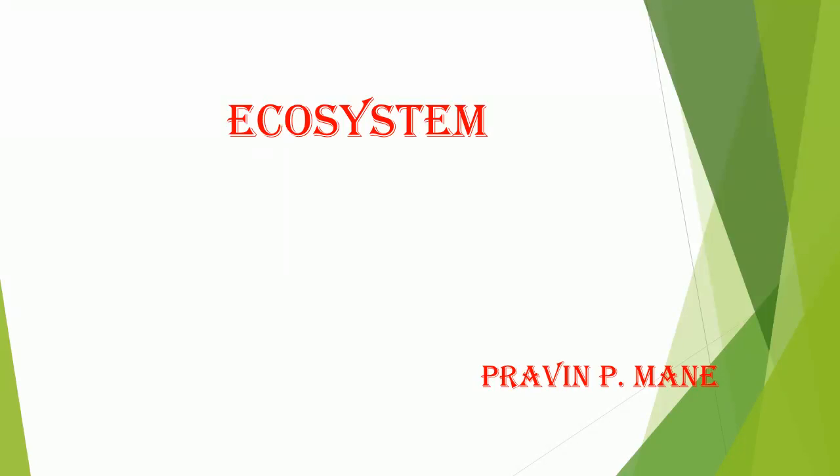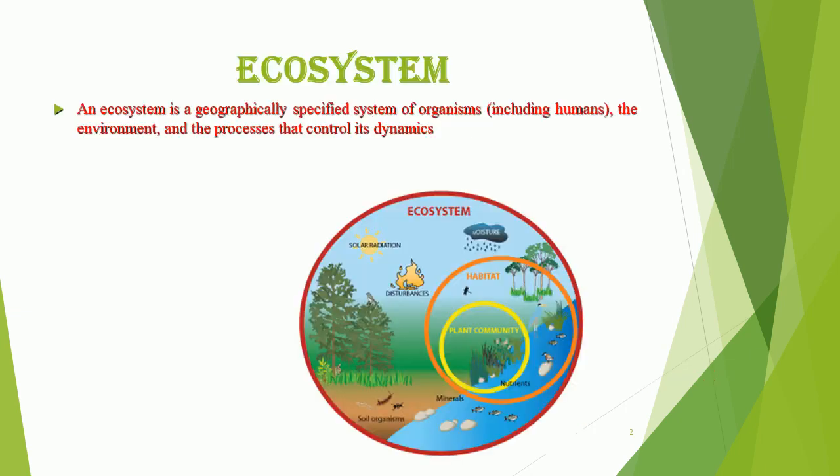Hello friends, through this video we will learn about the concept of ecosystem. An ecosystem is a geographically specified system of organisms, including humans, the environment, and the processes that control its dynamics.